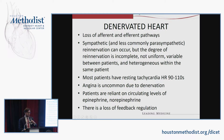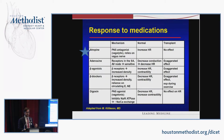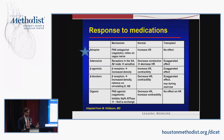Angina is uncommon due to denervation, so patients with coronary disease may not present with typical angina. Patients are reliant on circulating levels of epinephrine and norepinephrine. In urgent situations: atropine relies on the vagus nerve and should not be effective in transplanted patients. Adenosine may have an exaggerated effect because SA and AV receptors are hypersensitive. Beta agonists may also have an exaggerated effect due to increased beta receptor density and reliance on circulating catecholamines.